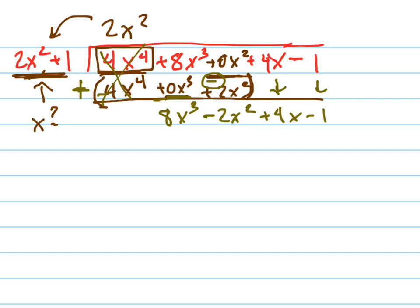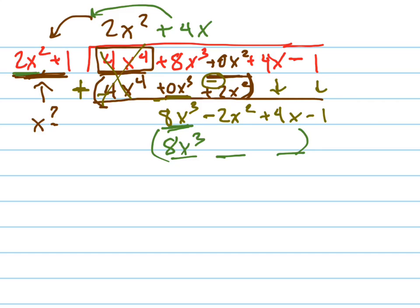Now let's do it again — color change to green. Divide 8x cubed by 2x squared. What do you get? You get 4x. Multiply it — and remember to leave that space, use parentheses. See how I'm going three terms? Multiply that through: you get 8x cubed, plus 0x squared because there's no x term there, plus 4x. That's a good thing — guess what's going to happen when I subtract?